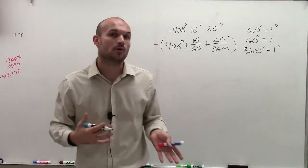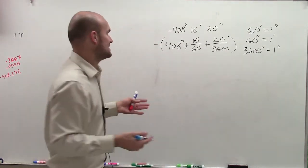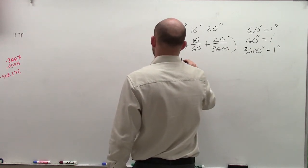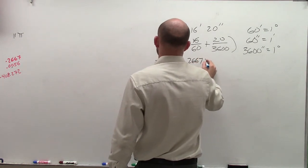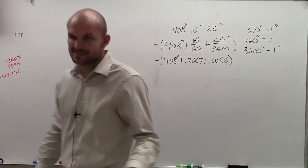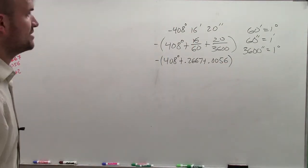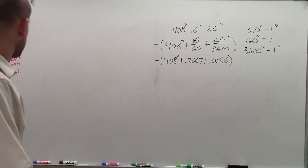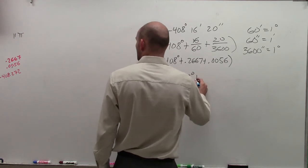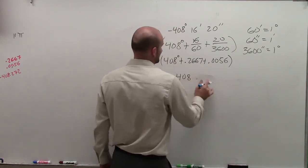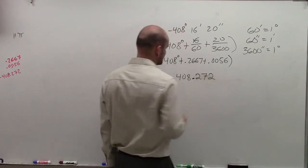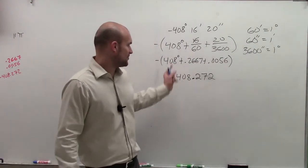Now I need to find the decimal approximation for this and add them up. So I have -408 degrees plus 0.2667 plus 0.0056. These are the decimal approximations I calculated. When I add those all up together, I get -408.272 degrees.